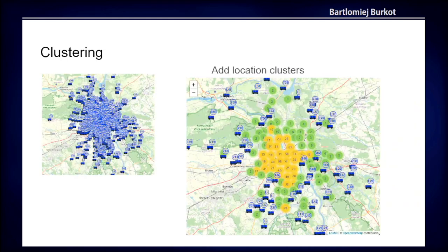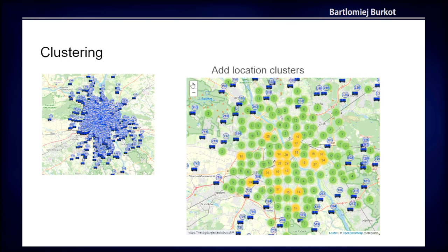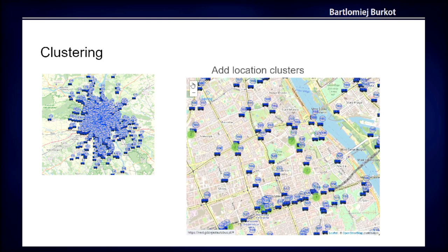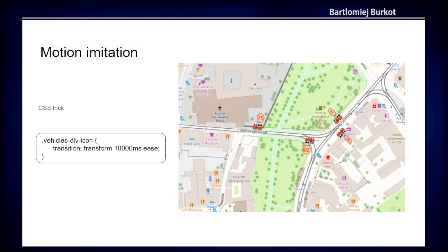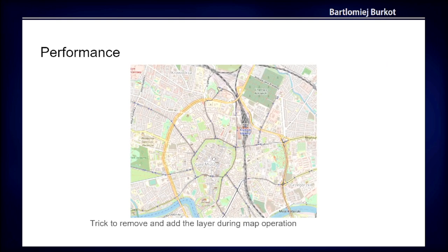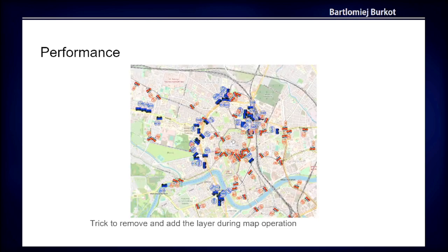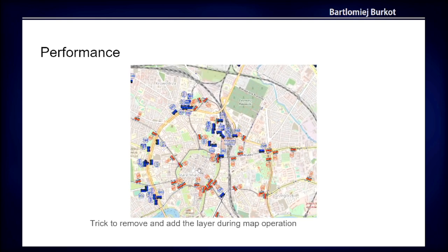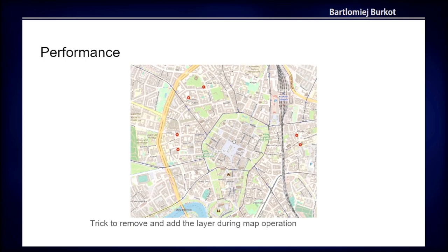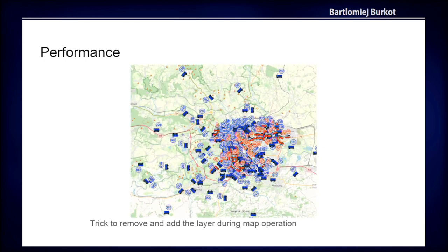I added an icon which I think is meaningful. I also applied clustering to increase the performance in the browser. I also found that when I rotate the image it shows which direction the bus is moving. Then I wanted to avoid the effect of markers disappearing and appearing in a different place, so I implemented movement and motion with a CSS transform trick. In the end I was still not happy with the performance on mobile, so I implemented a workaround where I remove all markers from the map before the user starts an operation like zooming or moving, and then add everything back after. It works more efficiently than having all markers on the map the whole time.